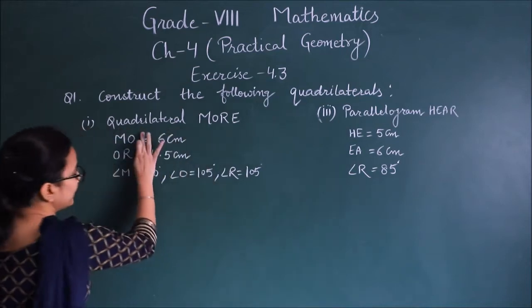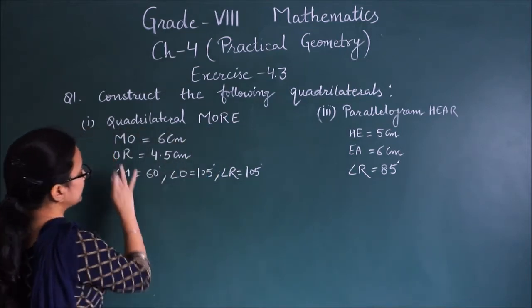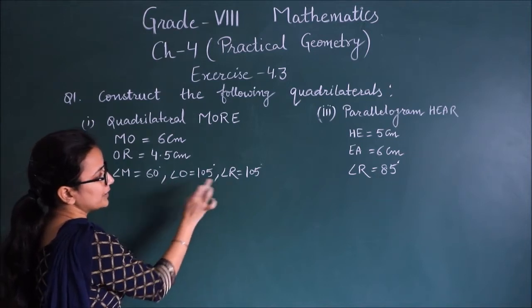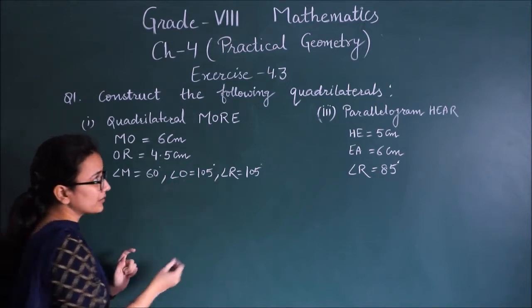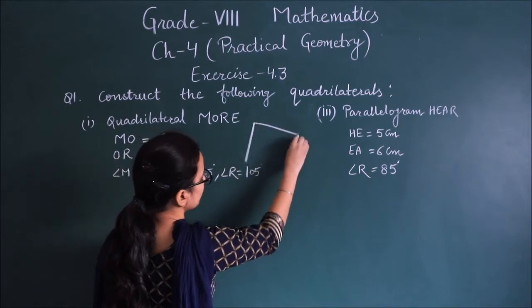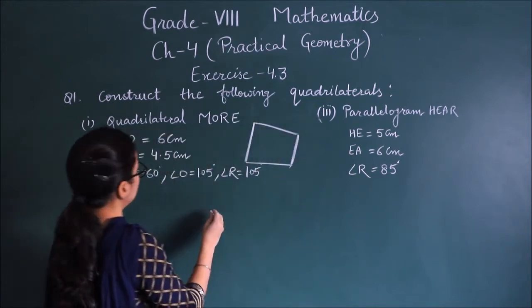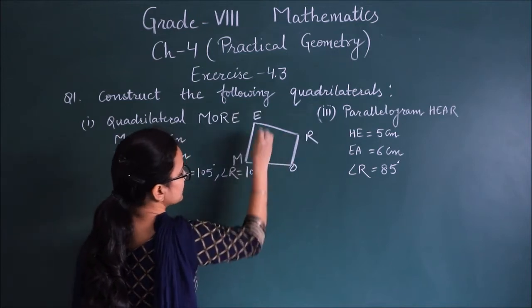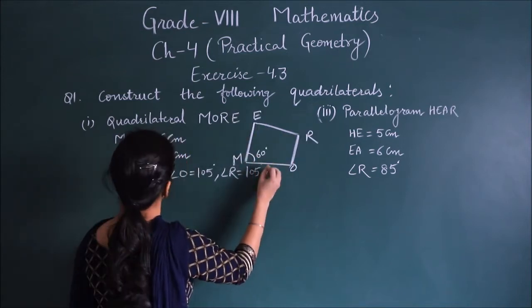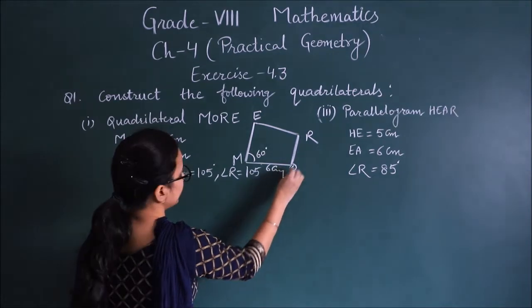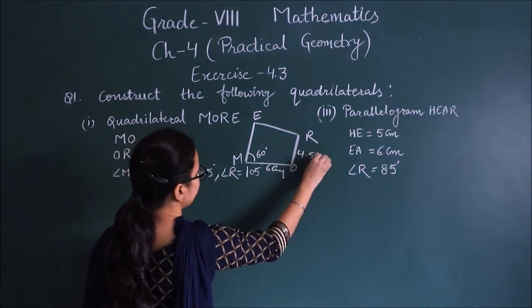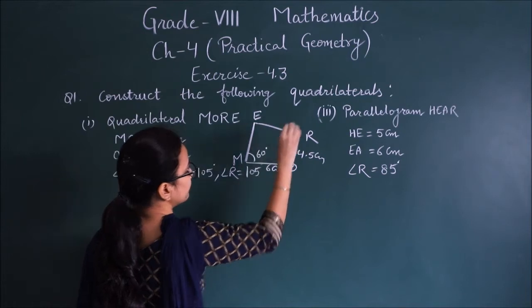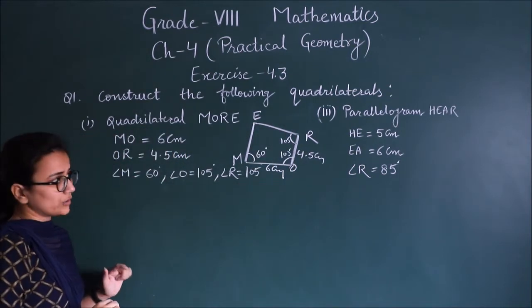Now look here, quadrilateral is M-O-R-E. M-O is given, O-R is given, angle M, angle O, angle R is given. So let's make a rough sketch. First of all, let's make this one. Suppose this is M-O-R-E quadrilateral.